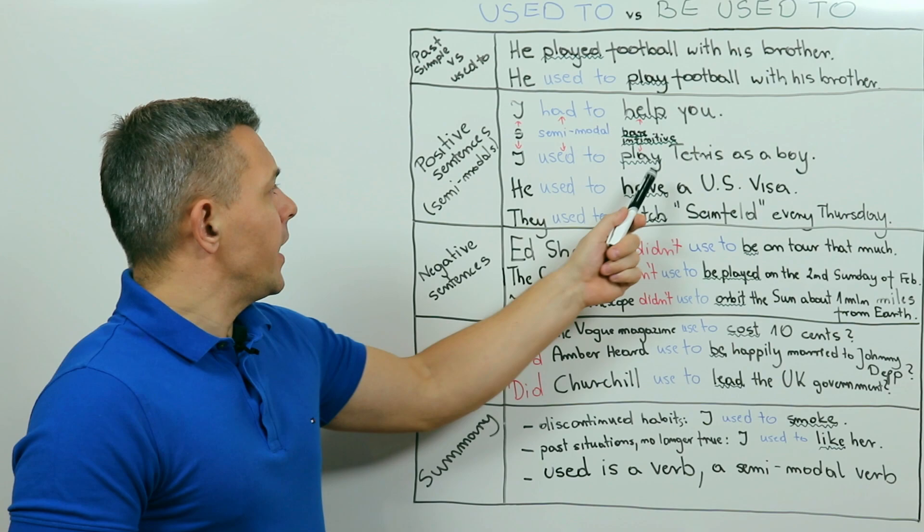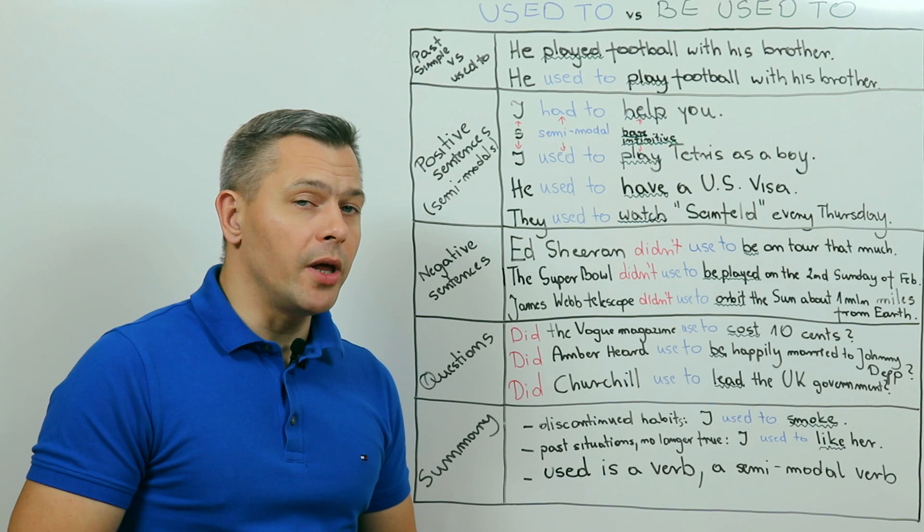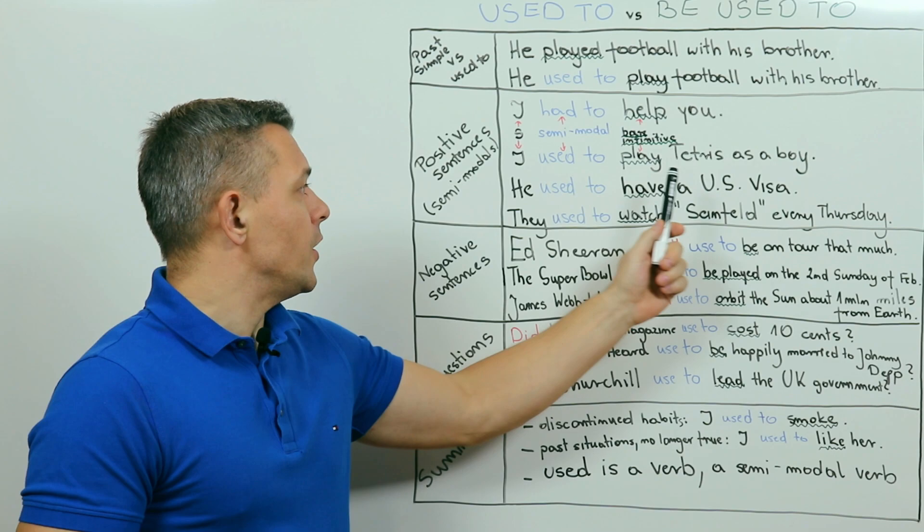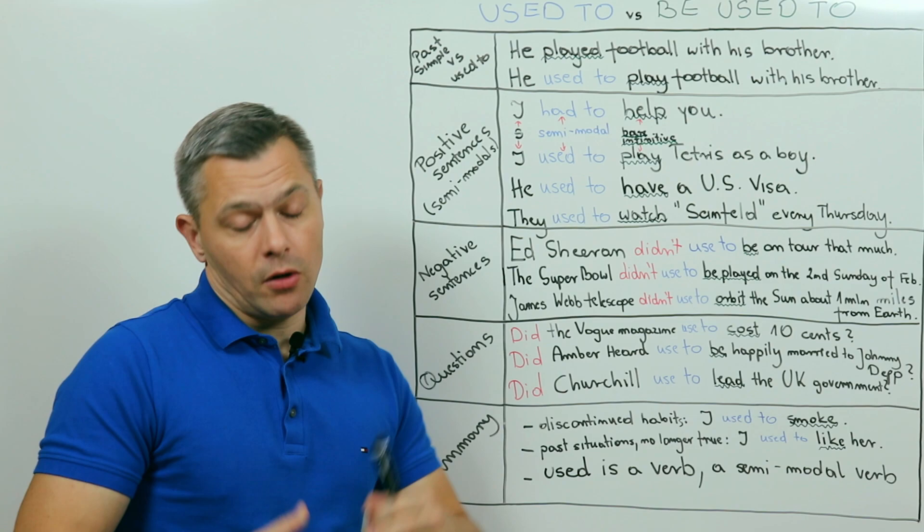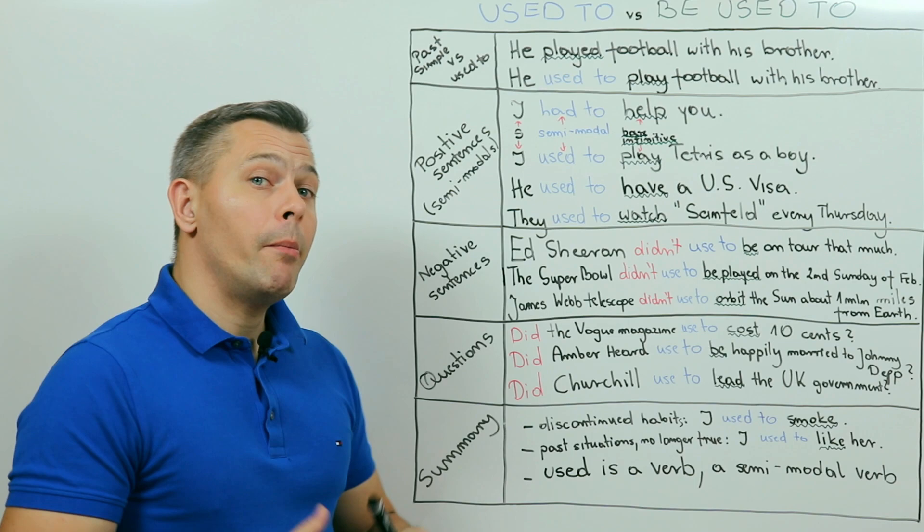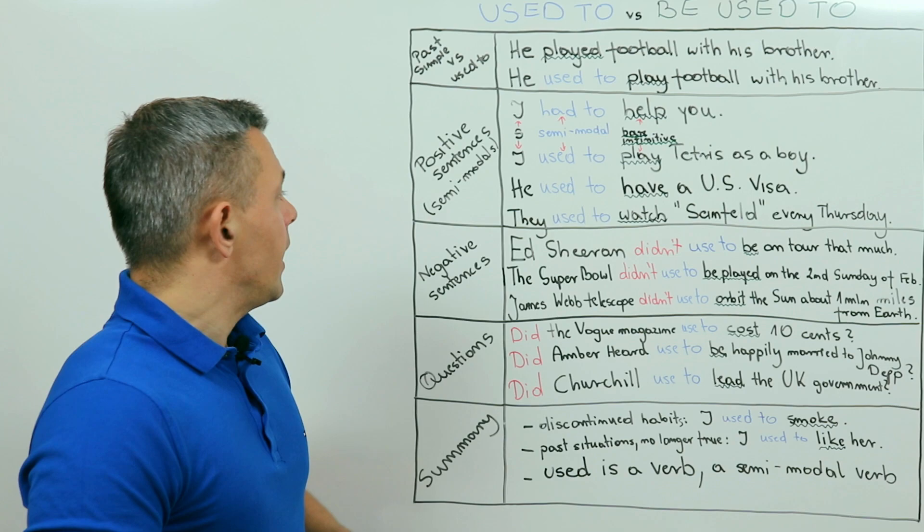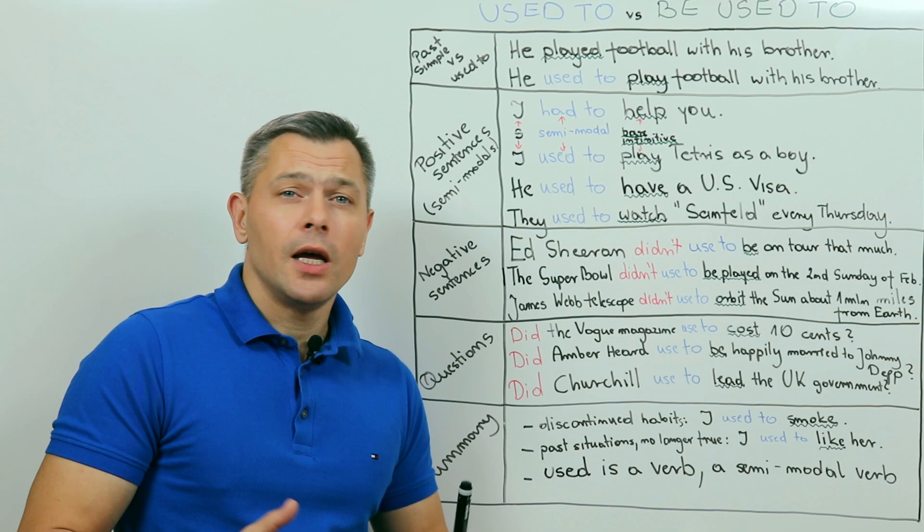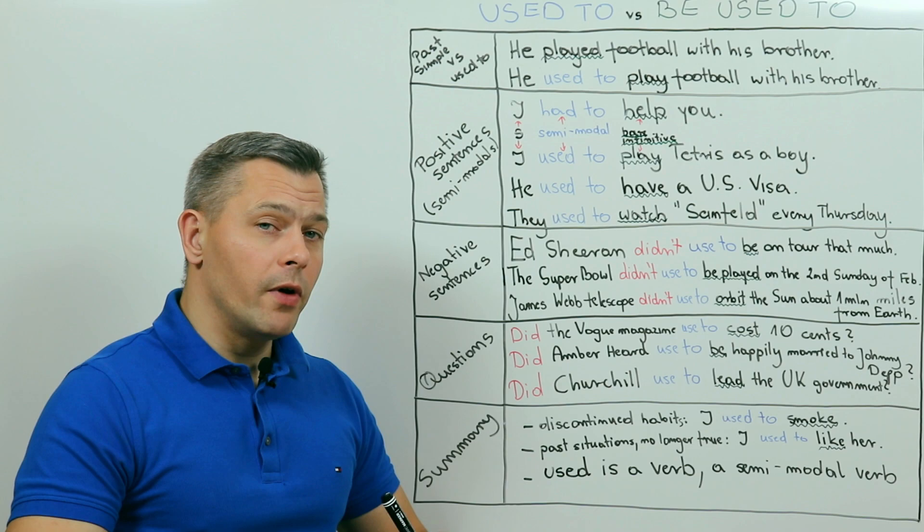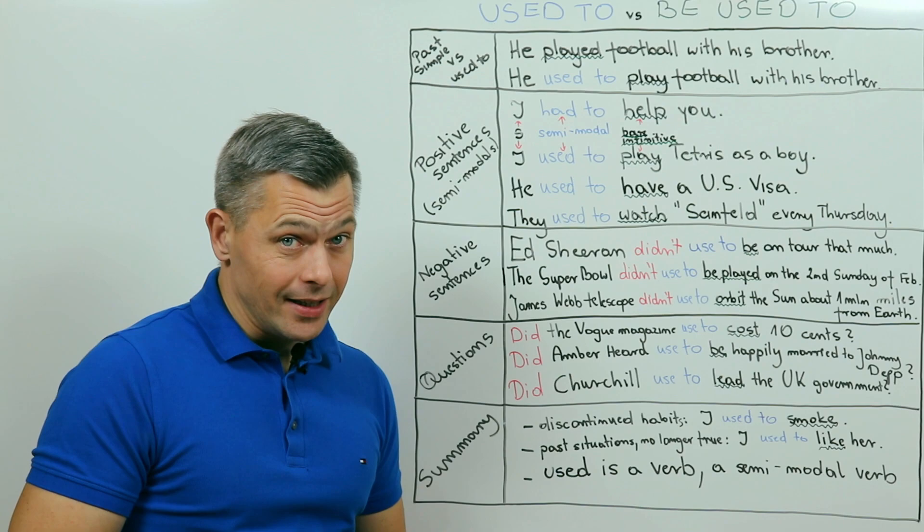I used to play Tetris as a boy. I used to. I don't anymore. These days I play much more sophisticated games. Another example. He used to have a US visa. This sentence implies that he used to have this, arguably, one of the most coveted documents in the world, but no more does. Maybe it's invalid now, maybe it expired. And the final example. They used to watch Seinfeld every Thursday. These days they watch some other sitcoms, but once they would sit back comfortably on the sofa, turn on NBC and let that highly acclaimed series from the 90s make them laugh.